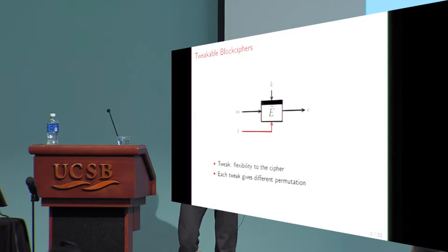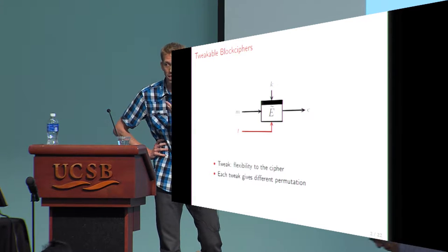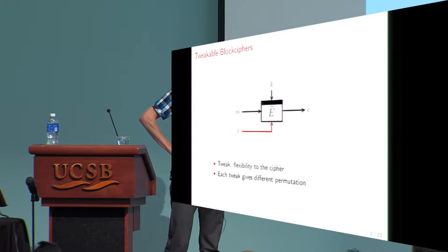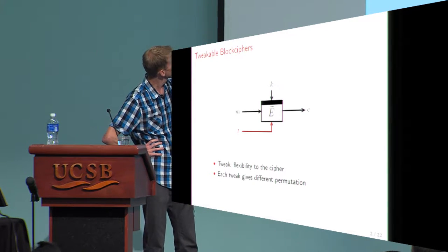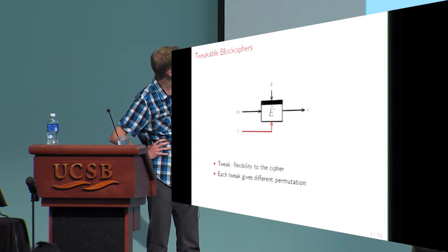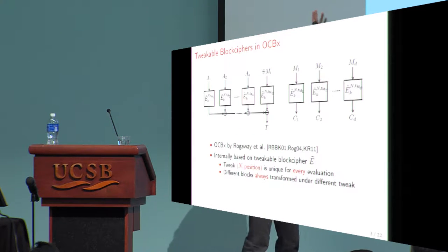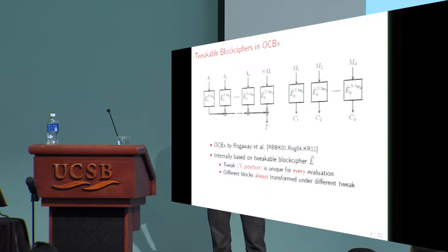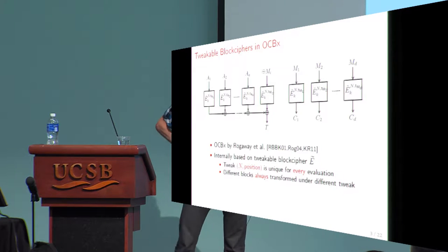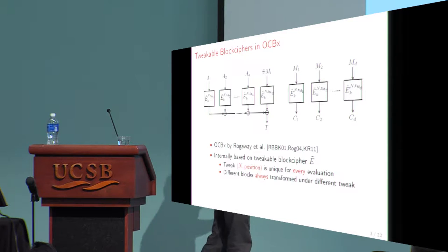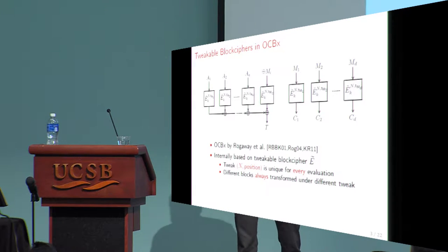The relevance of tweaks already became clear in this picture, in this scheme of SCT. To give another example, let me discuss what I called OCB-x — I learned that I should have called it theta-CB. So this is essentially the generic design of OCB1, OCB2, and OCB3.